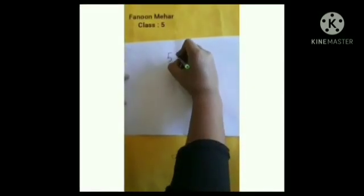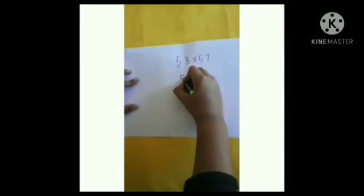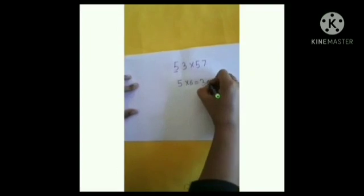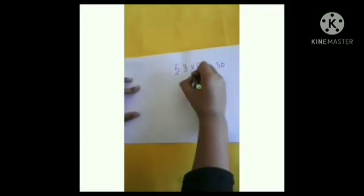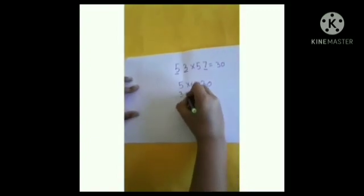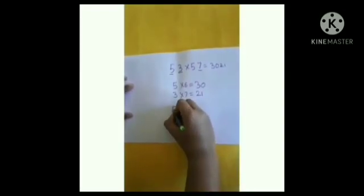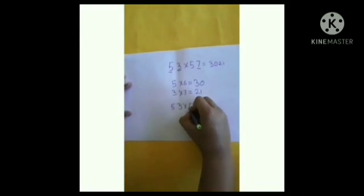Hi friends. We all know the multiplication of two-digit numbers. Here, I will show you an easy way. Here, we have to multiply 53 with 57. At the first step, multiply 5 and the number that comes after 5, which is 6. 5 into 6 is equal to 30, and that is the first two digits. And for the last two digits, multiply 3 into 7 is equal to 21. And we have the answer: 53 into 57 is equal to 3021. See how simple it is.